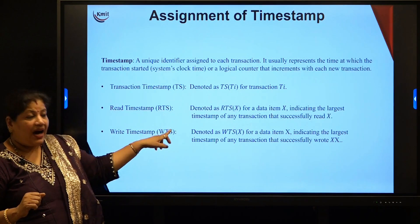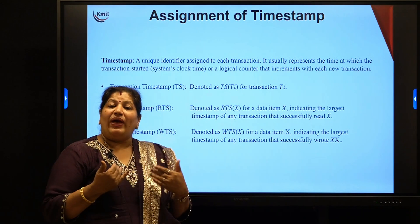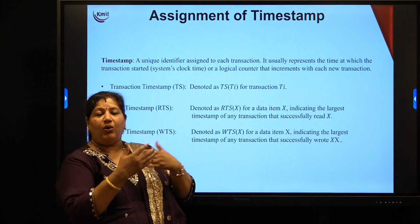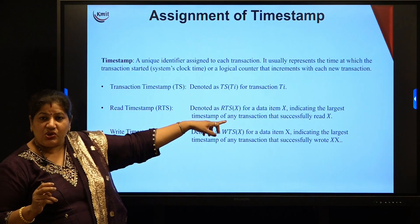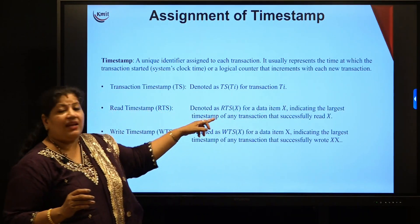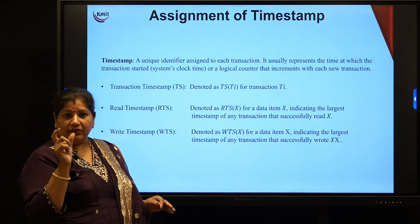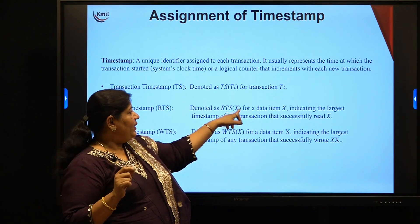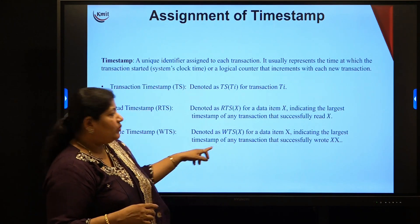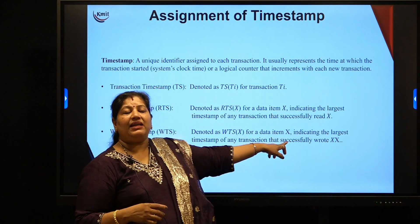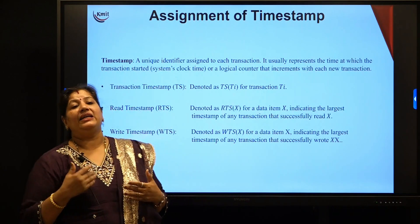The read timestamp, which we call RTS of x, is given on a data item x, because read and write actions are performed on data objects. RTS(x) is the read timestamp on data item x, which indicates the largest timestamp of any transaction that has successfully read x. Write timestamp WTS(x) is the write timestamp for data item x. It indicates the largest timestamp of any transaction that has successfully written the data item x.